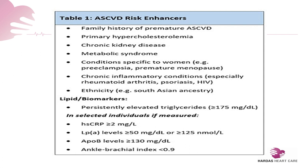In selected individuals, certain tests may be advised by your physician. These include estimation of lipoprotein A levels, apoprotein B levels, and high-sensitivity CRP. Sometimes the ankle-to-brachial index — measuring blood pressure at the ankle and at the brachial level — can be calculated, and if it is less than 0.9, it puts you at a higher risk of having ASCVD.